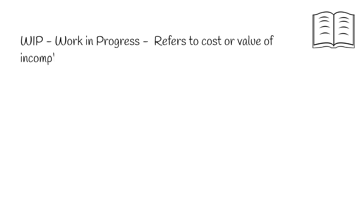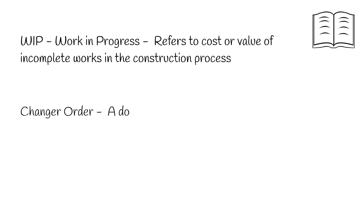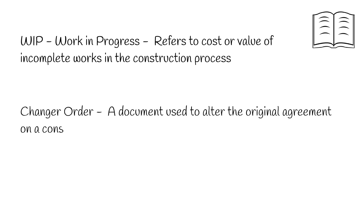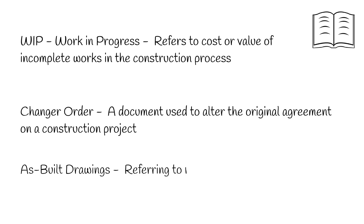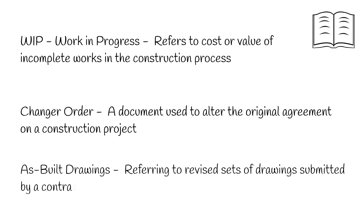Term 22. Work in Progress or WIP — refers to the cost or value of incomplete works in the construction process. Term 23. Change Order — a document used to alter the original agreement on a construction project. Term 24. As-built Drawings — referring to revised sets of drawings submitted by a contractor upon completion of a project.